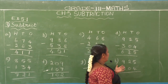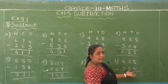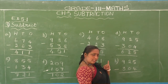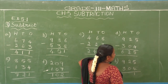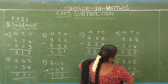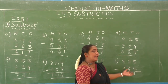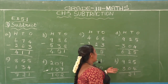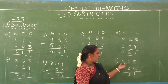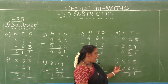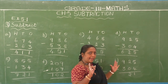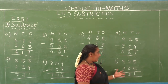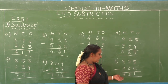H1: 925 minus 304. Ones place — second number 4, first number 5: 4 after 5. Difference is 1. Tens place — second number 0, first number 2: 2 minus 0 equals 2, since 0 has no value. Hundreds place — second number 3, first number 9: 3 after 4, 5, 6, 7, 8, 9. Difference is 6. So 925 minus 304 equals 621.